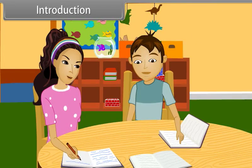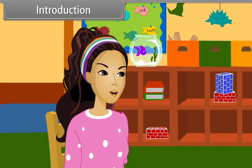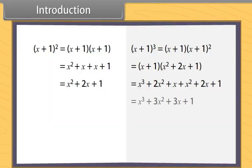When we expand x plus 1 squared, we get x squared plus 2x plus 1. And when we expand x plus 1 cubed, we get x cubed plus 3x squared plus 3x plus 1.